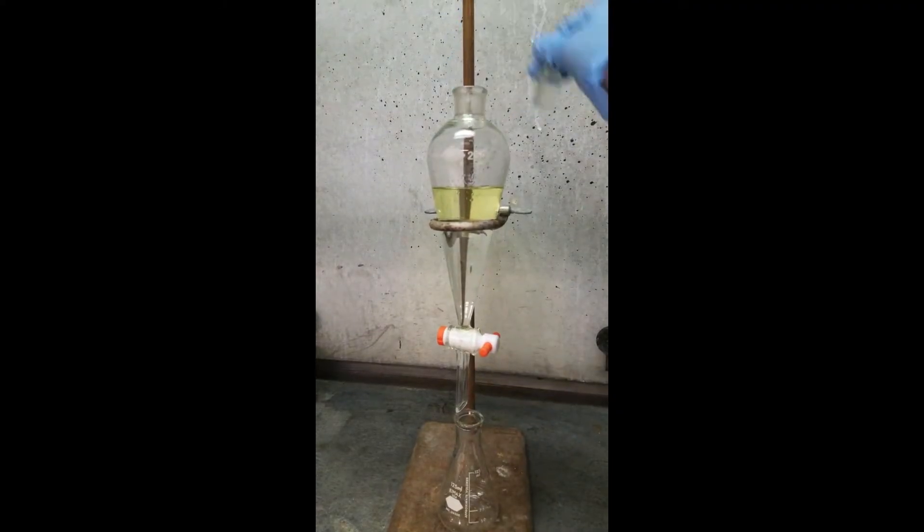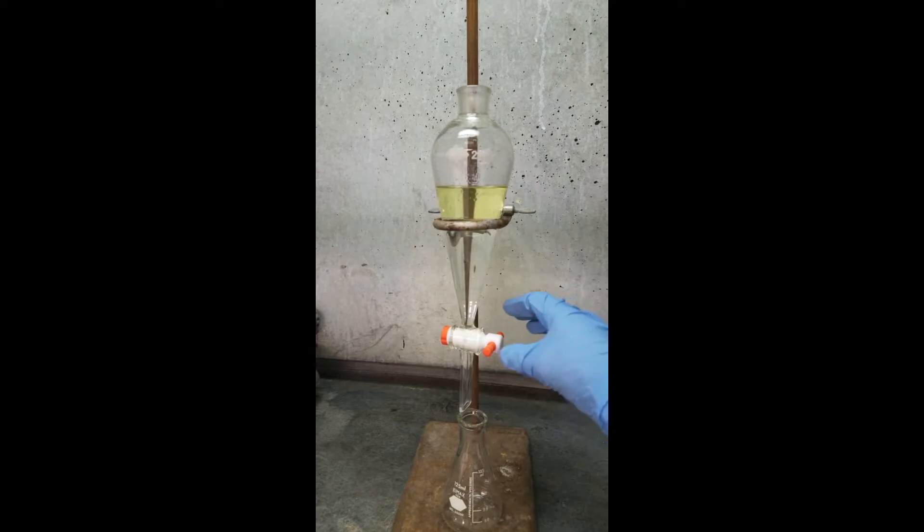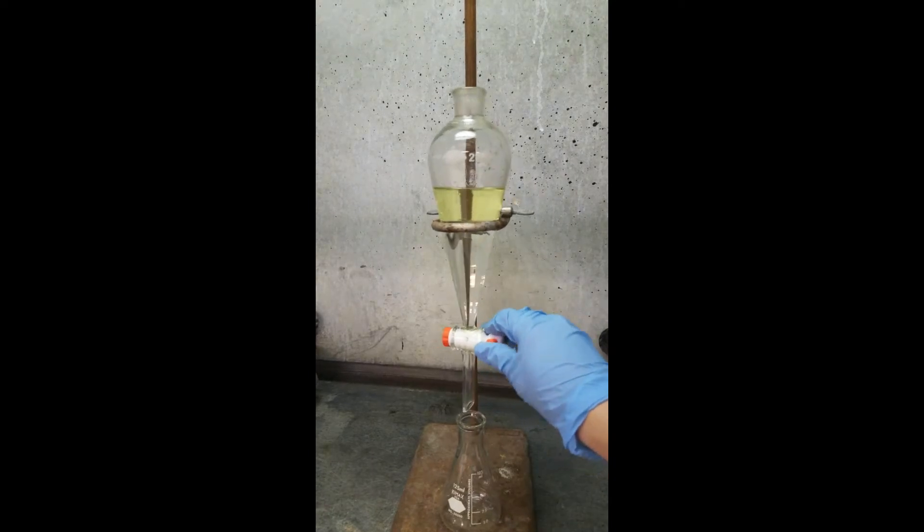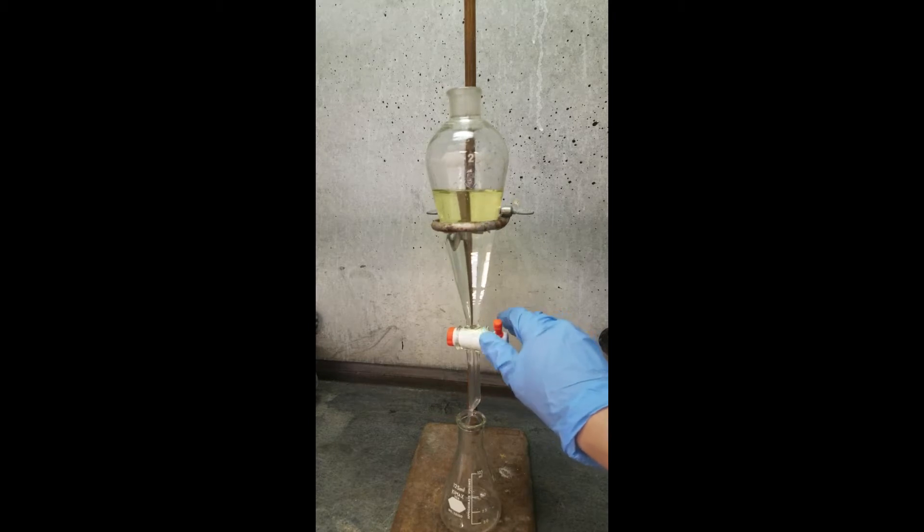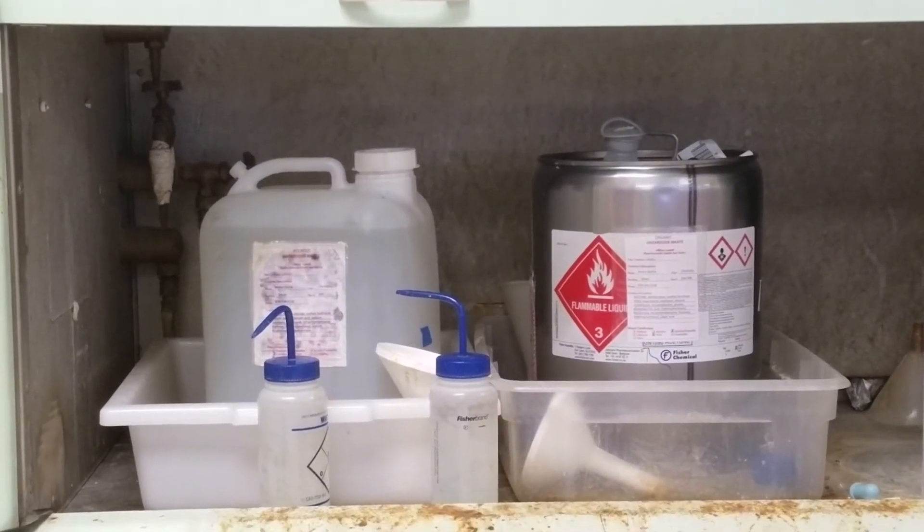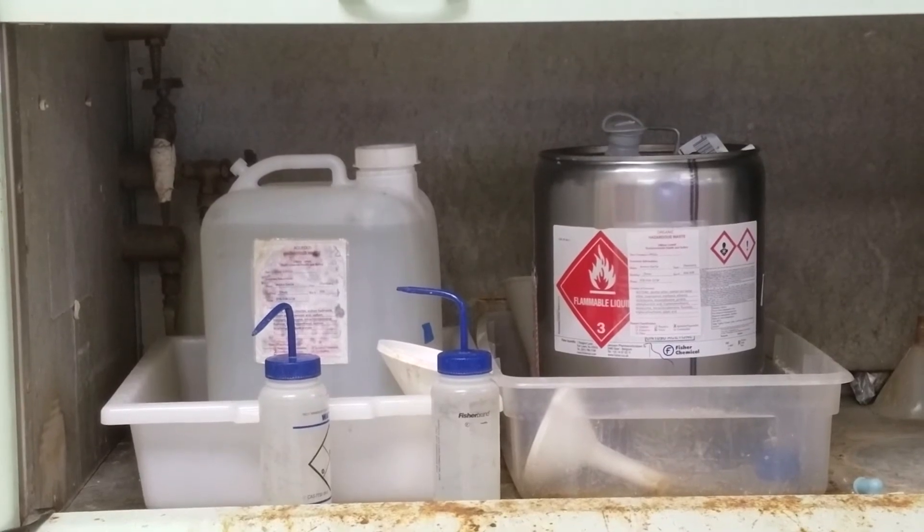Once the layers have settled, remove the stopper from the separatory funnel and drain the desired organic layer from the funnel. Perform additional extractions and washes as necessary. Remember to discard any excess liquid in the appropriate waste container.